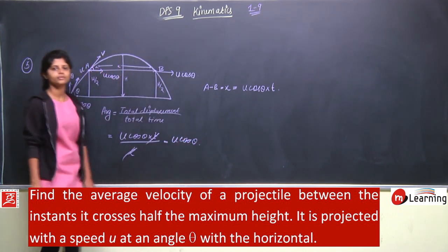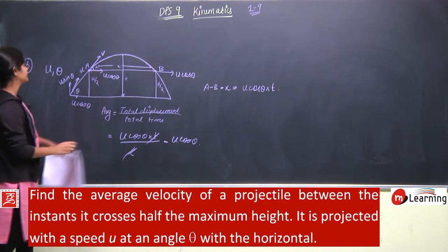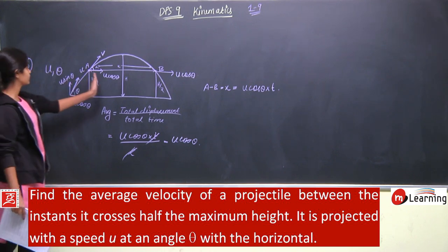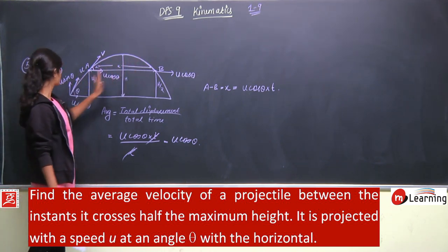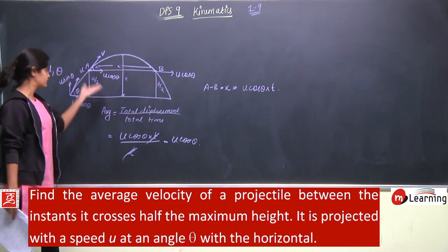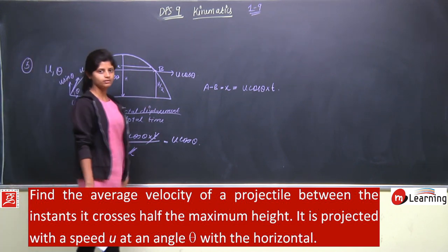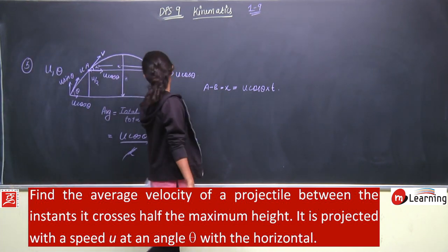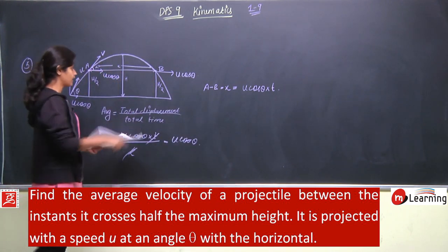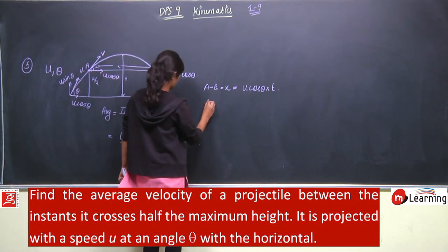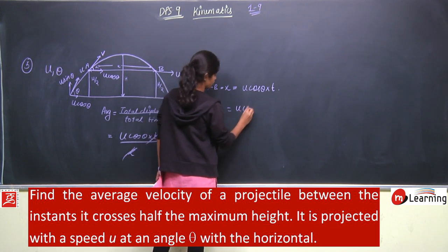So average velocity comes out to be u cos theta. And this is not only for half the maximum height — even if the two points are at h/3, h/4, or any equal height on the trajectory, the average velocity between those two points will always remain u cos theta. Because average velocity does not depend on height. The average velocity comes out to be u cos theta horizontally.